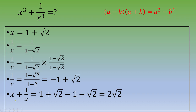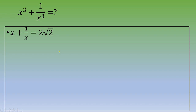Now, if we calculate x plus 1 over x, this is (1 plus square root of 2) plus (negative 1 plus square root of 2). The ones cancel since 1 minus 1 equals 0, so we are left with 2 times square root of 2. To recap, we now know that x plus 1 over x equals 2 square root of 2.